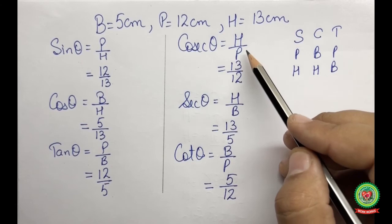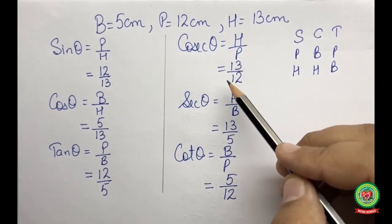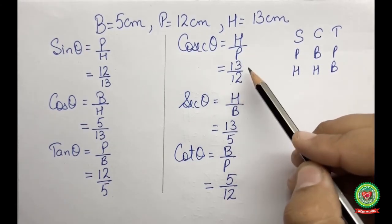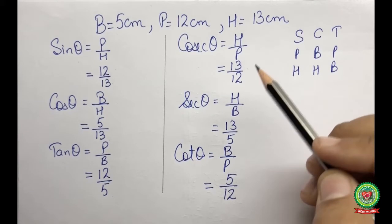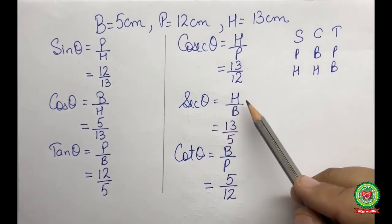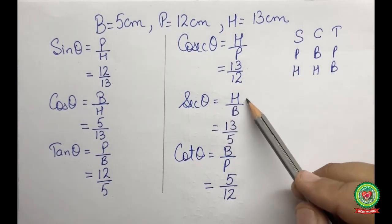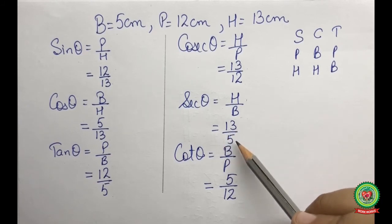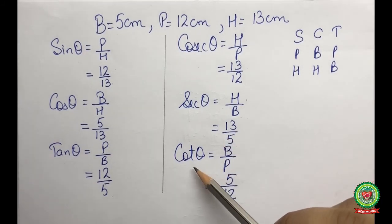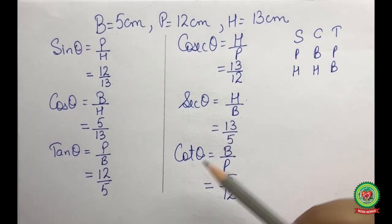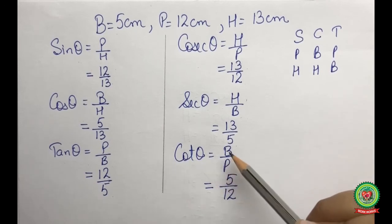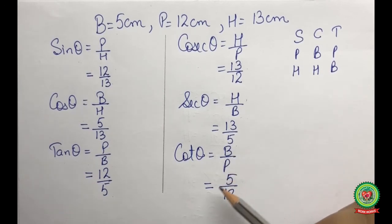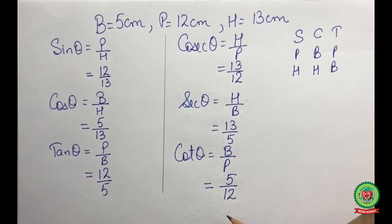The remaining three ratios: cosecant theta = h/p = 13/12. Secant theta = h/b = 13/5. And cotangent theta = b/p = 5/12.